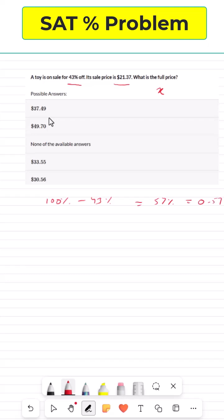Now we can write our equation. We can say 0.57 of X is equal to $21.37. This just becomes 0.57 times X equals 21.37.